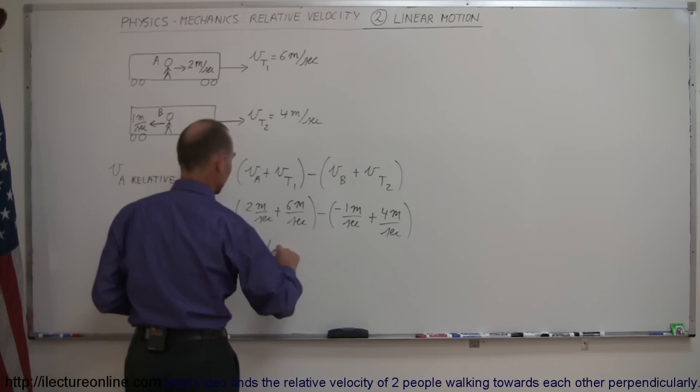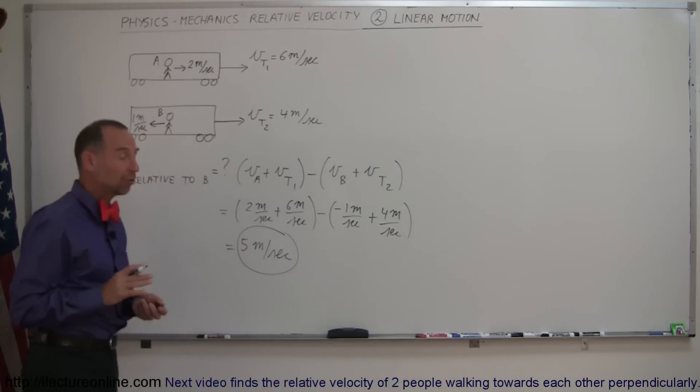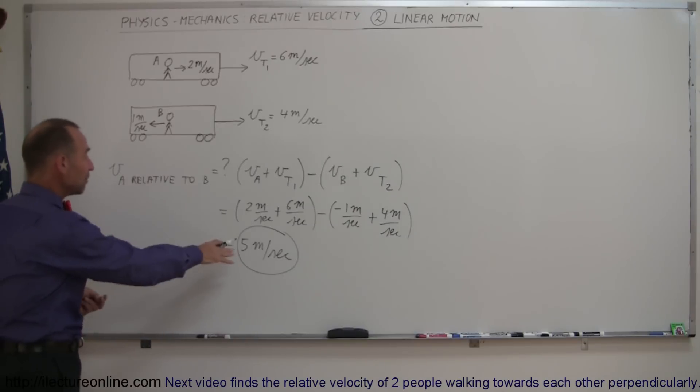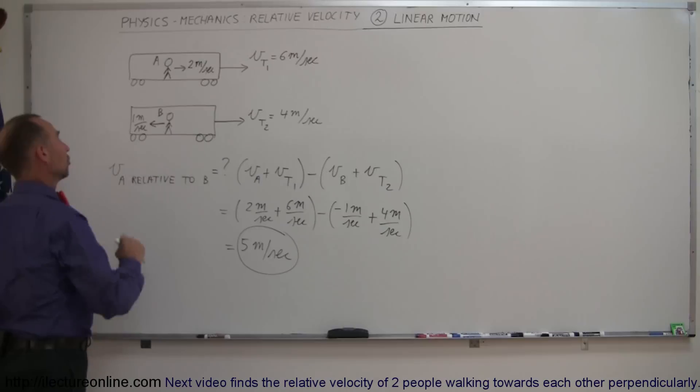So the solution is that observer A is moving to the right at 5 meters per second according to observer B. And that's how you do a problem like that.